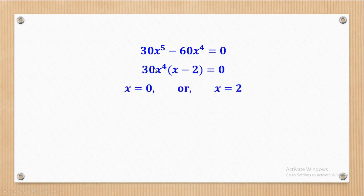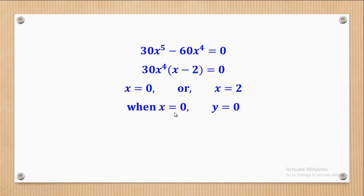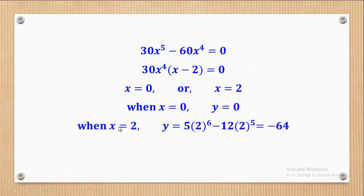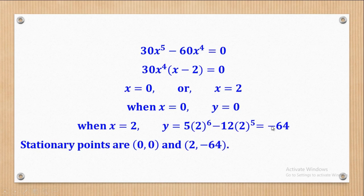So either 30x⁴ = 0 giving x = 0, or x − 2 = 0 giving x = 2. When x = 0, y = 0; when x = 2, y = −64. Therefore the stationary points are (0, 0) and (2, −64).